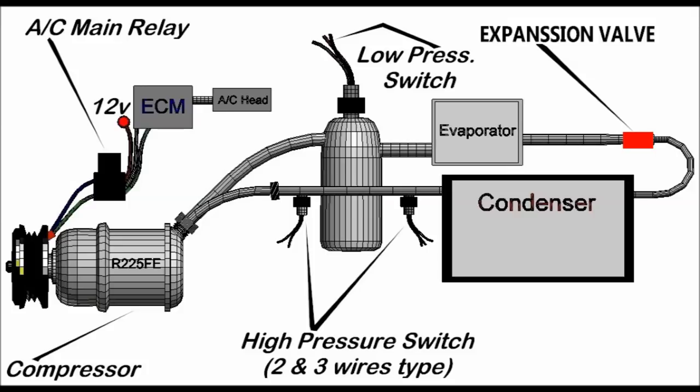And then it goes to the expansion valve, which is in red here. And this is like a little block. Sometimes it's an orifice tube. It could be an electronic controlled expansion valve, which we're going to go into our next video. And then from there, it's going to go into the evaporator. That's what gets cold.